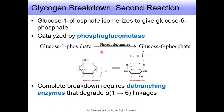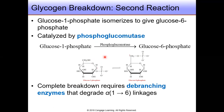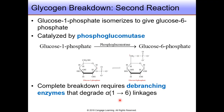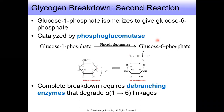This is called isomerization by mutase. For complete breakdown, since glycogen phosphorylase cleaves the alpha-1,4 linkages in glycogen, complete breakdown requires an enzyme called debranching enzyme that degrades the alpha-1,6 linkages. When glycogen, rather than glucose, is the starting material for glycolysis, there is a net gain of three ATP molecules for each glucose monomer rather than two ATP molecules as when glucose itself is the starting material. We conclude that glycogen is a more effective energy source than glucose.